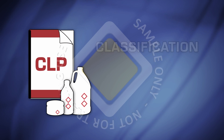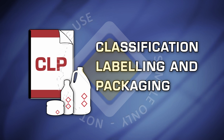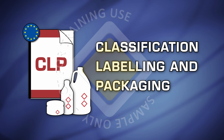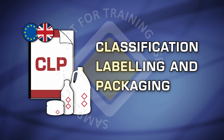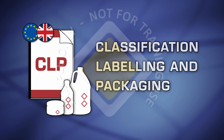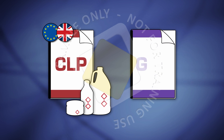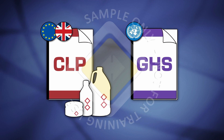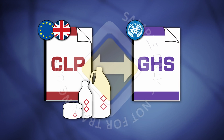CLP stands for classification, labelling and packaging. The CLP regulation is a European Union regulation from 2008, which aligns the British system of classification, labelling and packaging of chemical substances and mixtures to the globally harmonised system of classification and labelling of chemicals, or GHS.